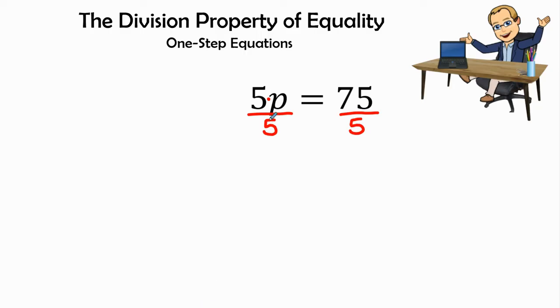Now we have our 5 divided by 5 gives us 1p. And so we will put that p, keep our equal signs in line just for organizational sake. And then we will have 75 divided by 5.